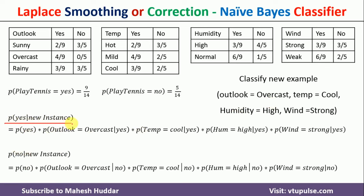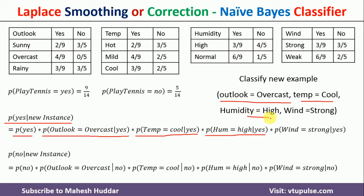To calculate the posterior probability of Yes given the new instance, we use this equation: probability of Yes multiplied by probability of Outlook equals Overcast given Yes, multiplied by probability of Temperature equals Cool given Yes, multiplied by probability of Humidity equals High given Yes, and finally probability of Wind equals Strong given Yes. We know probability of Yes is 9/14, and all the corresponding conditional probabilities are known to us.